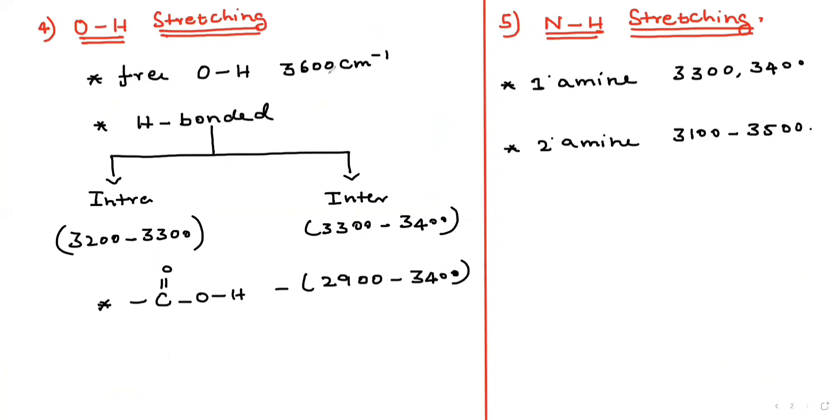In free O-H, the original value is 3600. Always, please note, hydrogen bonding leads to decreasing stretching frequency. Always for intermolecular hydrogen bonding, it's more higher compared to intramolecular. For carboxylic acids, the O-H value is 2900 to 3400.